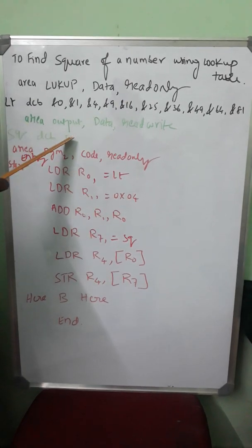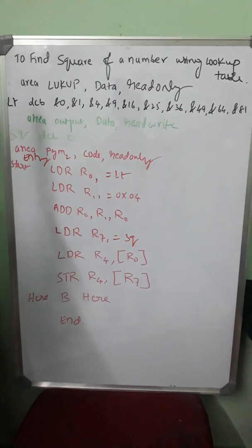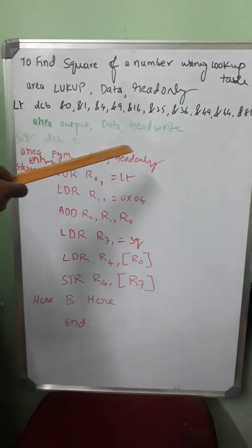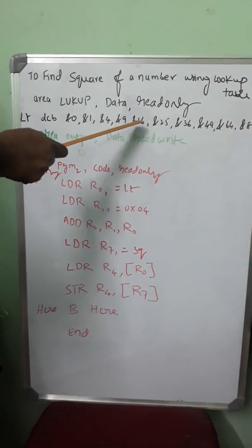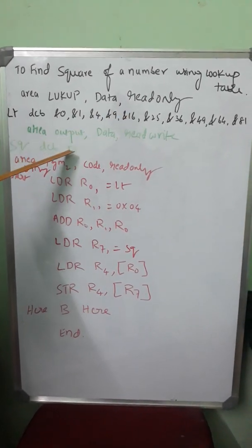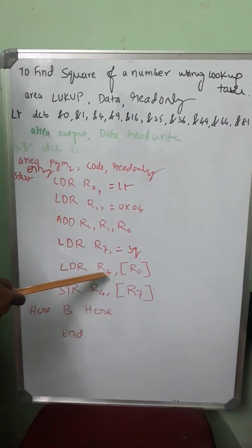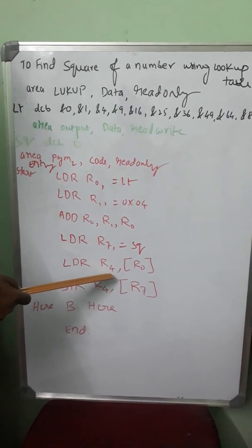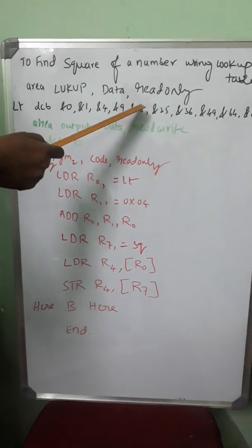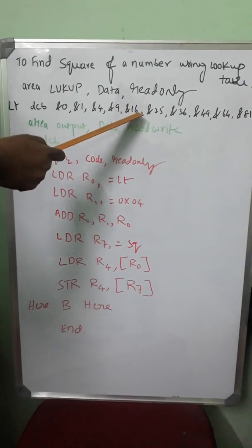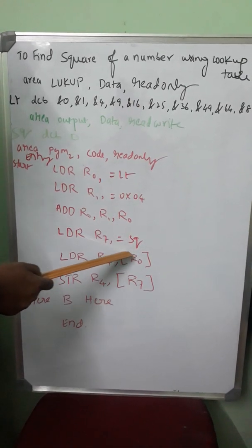I have to transfer 16 to another memory location. Between two memory locations, data transfer is not possible in ARM processor. There are no instructions which support data transfer between memory to memory. So I take R4 as the intermediate register.